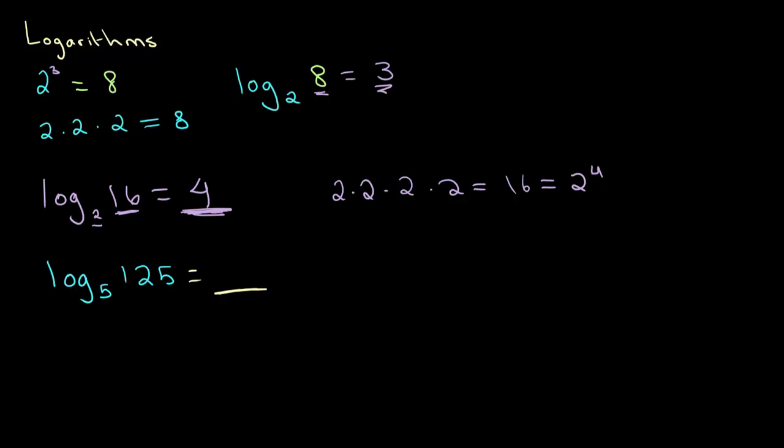Well, we know that 5 multiplied by 5 is 25. And if we multiply this by 5 one more time, we get 125. So this is equal to 5 cubed, which is equal to 125. Let's write that more neatly. Therefore, our answer over here is 3.